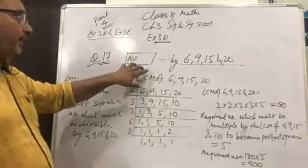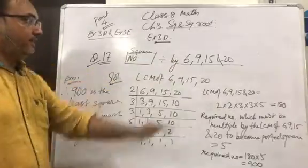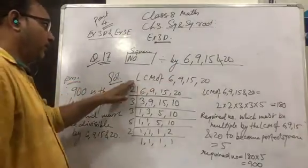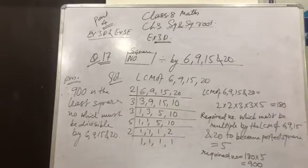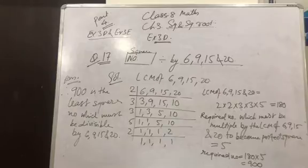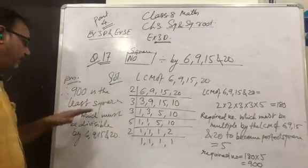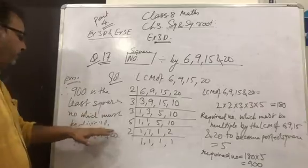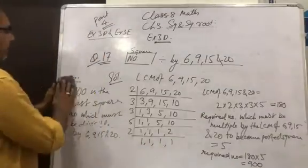To summarize: we need to find a square number exactly divisible by 6, 9, 15, and 20. First we find the LCM of 6, 9, 15, and 20, which is 180. The required number must be multiplied by the LCM to become a perfect square, and that factor is 5. So the required number equals 180 × 5 = 900, and 900 is the least square number divisible by 6, 9, 15, and 20.